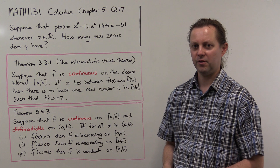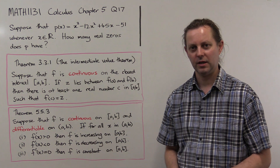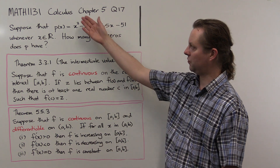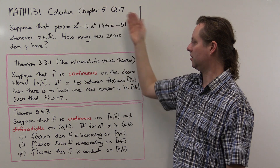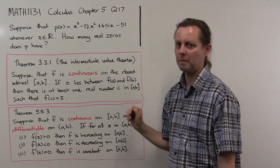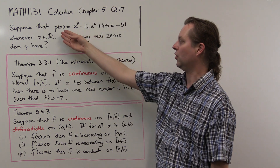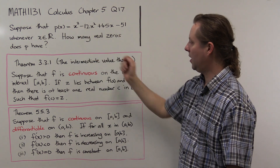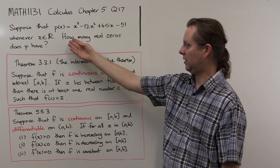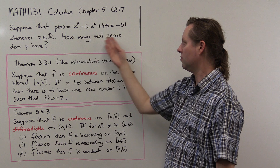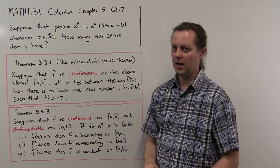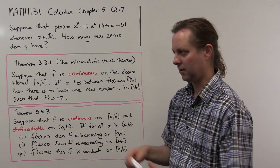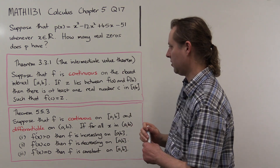Hello, I'm Jonathan Crest from the University of New South Wales and I'm going to explain how to solve one of the calculus problems from Math 1131. It's chapter 5 question 17. In that question we have a cubic polynomial P, and the question asks us how many real zeros does P have? We're not just going to draw a graph and count them.